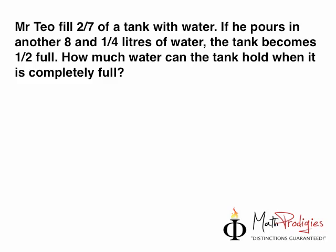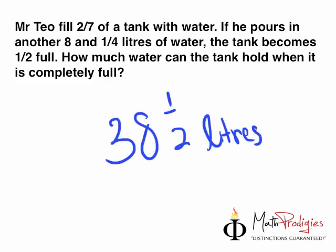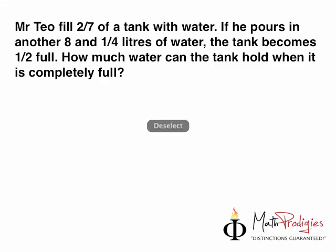Alright, and the answer is 38.5 liters. So if you got it right, give yourself a high five, you are a math prodigy. Good job. So how do we do this question? Very easy. First off, you need to read the question line by line. So read the first line. Mr. Teo filled 2/7 of a tank with water.